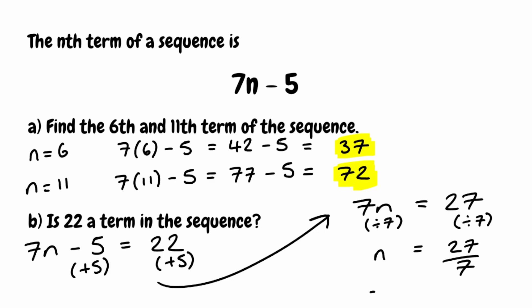If we put this in the calculator, we'd get 3.857142 with those digits repeating. Because our value of n isn't an integer, 22 isn't going to be a term in the sequence. So when asked if 22 is a term in the sequence, we simply say no — because n is not an integer.